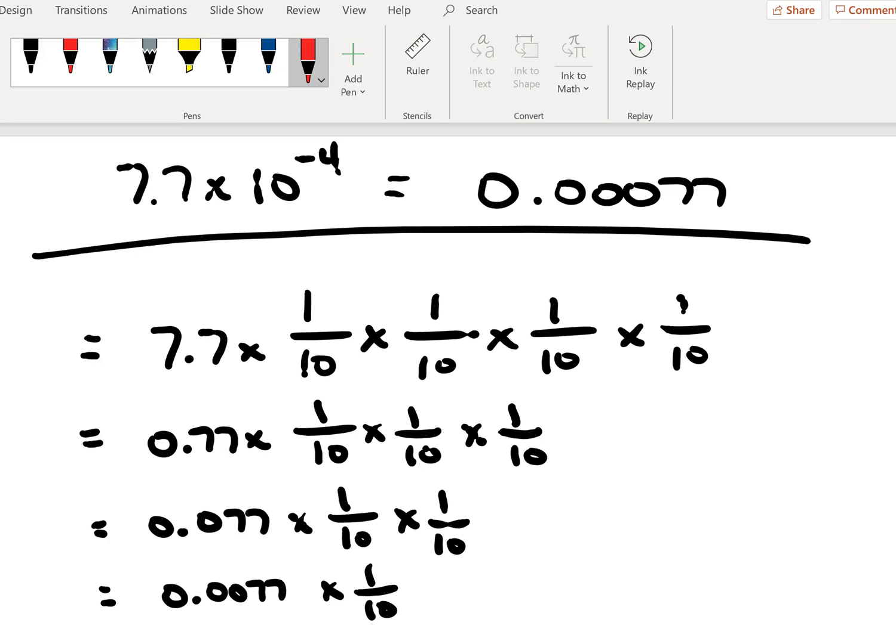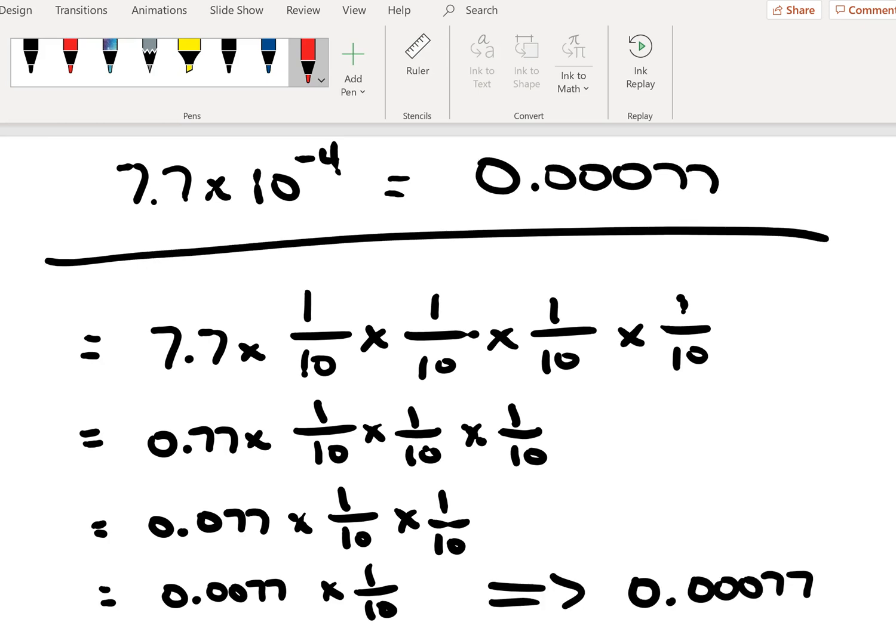And then for our final step here, we do indeed come out with an equivalent expression of 0.00077. And if we remember from the lecture course, we saw that what we did was we moved 1, 2, 3, 4 places, and that would have given us the same expression, 7.7 times 10 to the minus 4.